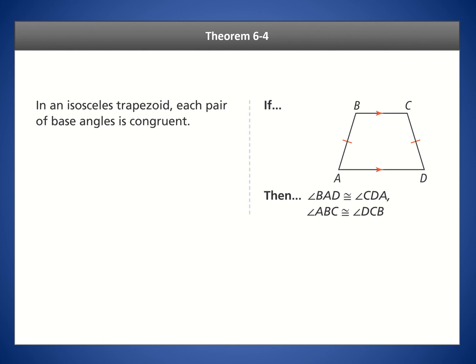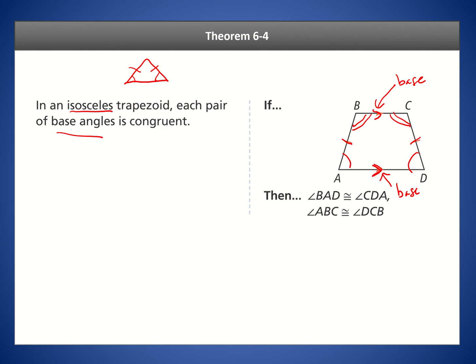Now let's look at a theorem for trapezoids. An isosceles trapezoid has two congruent non-parallel sides, similar to how an isosceles triangle has two congruent sides. When the two legs are the same, the base angles at each parallel side are congruent. There are two pairs of base angles, and they are called base angles because the parallel sides of a trapezoid are known as the bases.